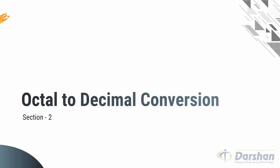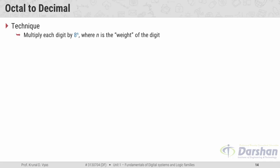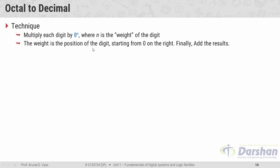The second section covers octal to decimal conversion. The technique is to multiply each digit by 8 raised to the power n, where 8 is the base of the octal number and n is the weight of the digit. The weight is the position of the digit starting from 0 on the right. Finally, we add all results. Let us take the first example: 724 in octal.